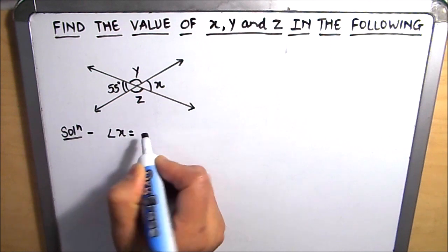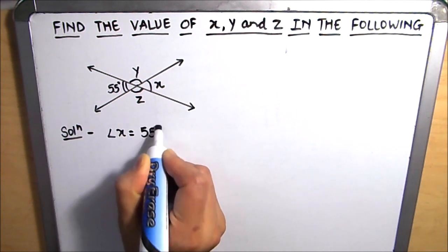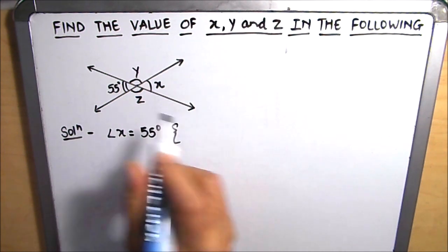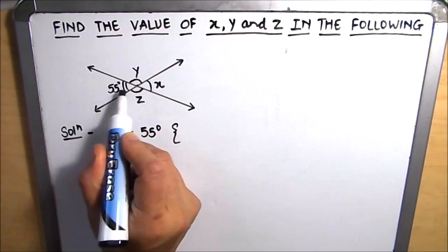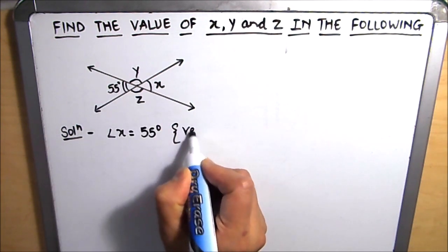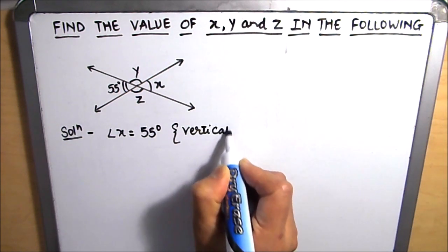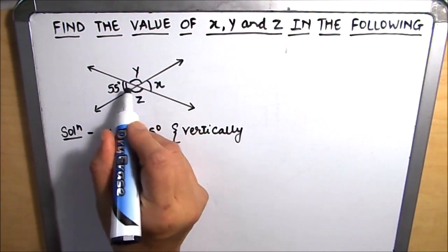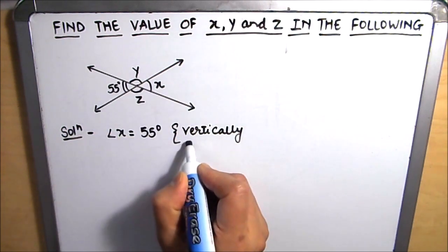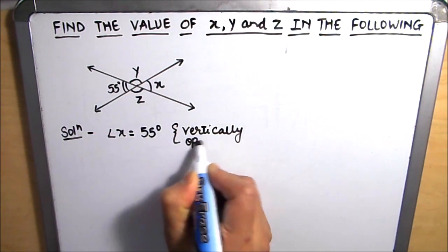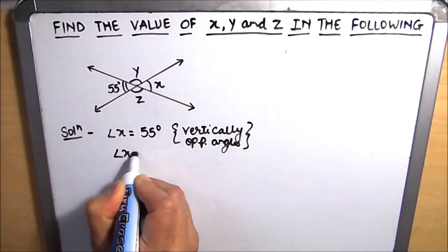We can see that angle x is equal to 55 degrees, because x and 55 degrees are vertically opposite angles. When two lines intersect at a point, the opposite angles are called vertically opposite angles. So we got the value of x, which is 55 degrees.